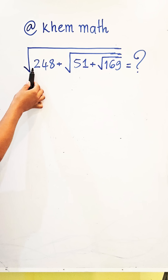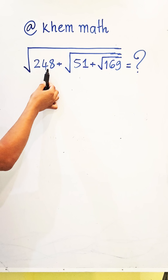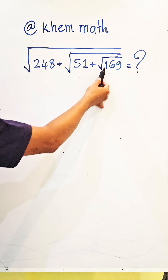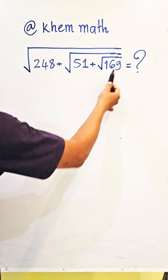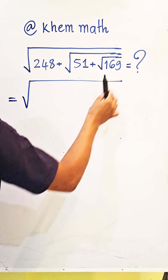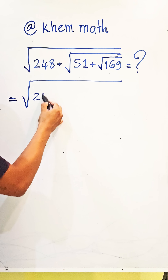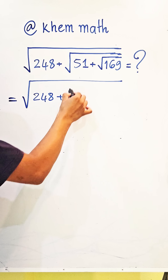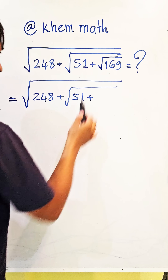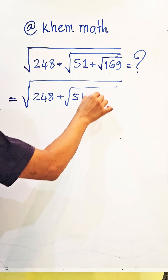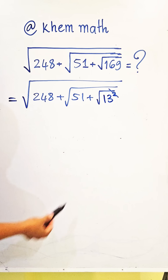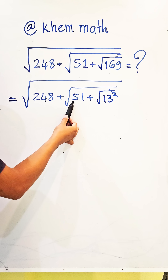We have the square root of 248 plus the square root of 51 plus the square root of 169. Since 169 equals 13 squared, the square root of 169 equals 13. Adding 13 plus 51 gives us 64, so the expression simplifies to the square root of 248 plus the square root of 64.